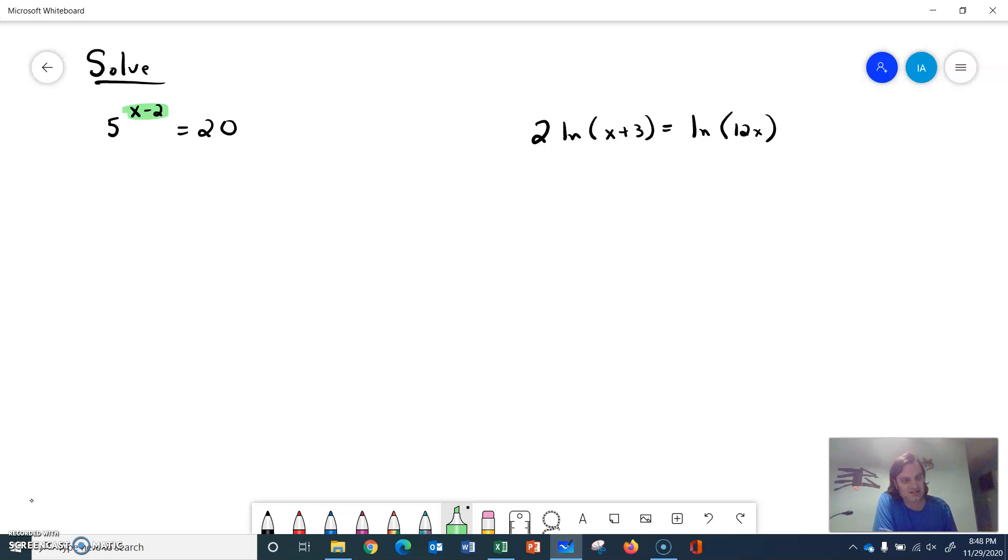So we'll change it over to a logarithm. So that will look something like log base 5 of 20 equals x minus 2.